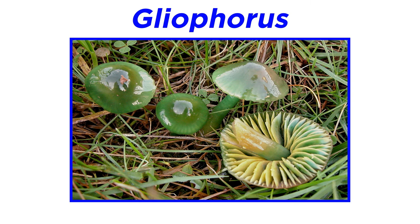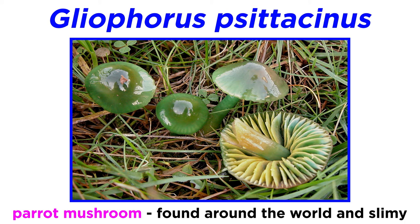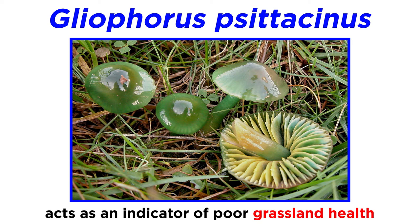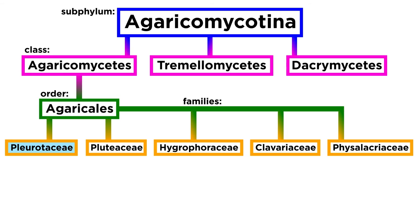Lastly from the family Hygrophoraceae, we will discuss the genus Gliophorus, particularly the species Gliophorus cytokinus, commonly called the parrot mushroom because of its bright green and red color. It can be found around the world and is quite slimy when young. Gliophorus cytokinus can be an indicator of grassland health, appearing in yards after years of low nutrients in the soil. The genus Gliophorus was originally part of Hygrocybe, but developments in genetics elevated these mushrooms to their own genus.